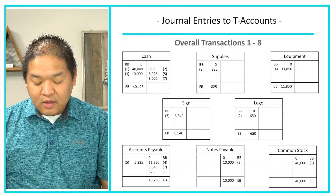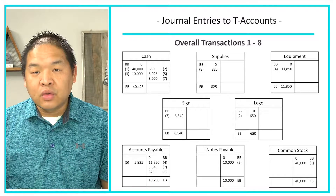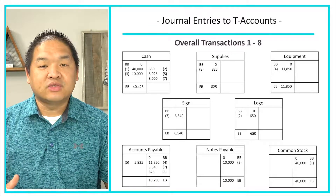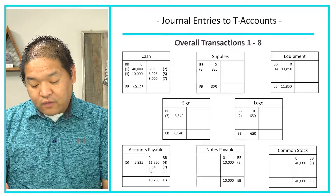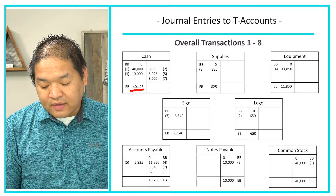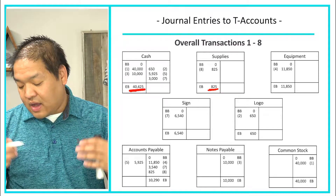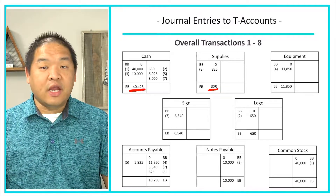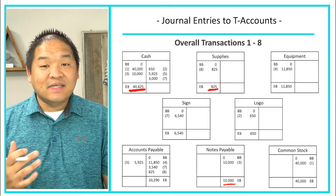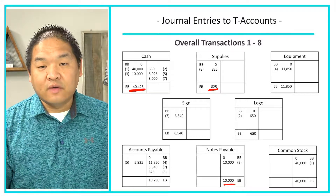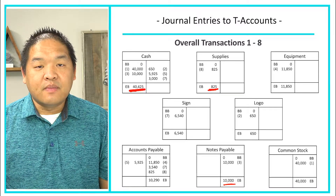In the last lesson we had all of these transactions totaled up with T-accounts and their balances. For example, the company — Walnut Creek Inc. — has $40,425 in their bank account, $825 in supplies, and $10,000 owed on a notes payable. We've summarized all of the activities within a cycle for this business.